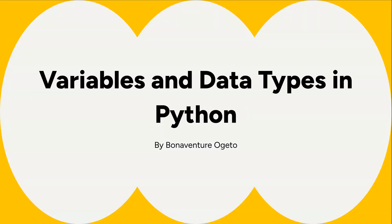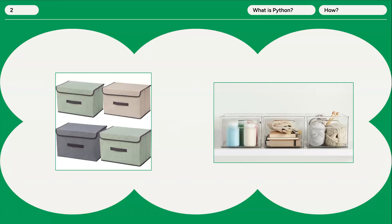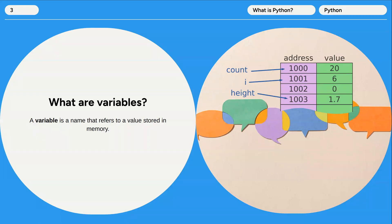In this lesson we're going to look at one of the most fundamental concepts in Python — variables and data types. Think of variables as labeled boxes where we store different kinds of information. By the end of this session, you're going to understand how variables work, the different data types, and how to use those data types in your programs. A variable is a name that refers to a value stored in memory, and variables help us store, manipulate, and retrieve values during program execution.